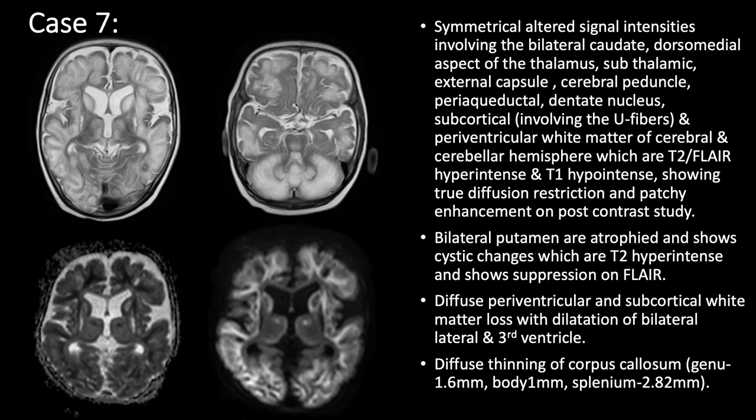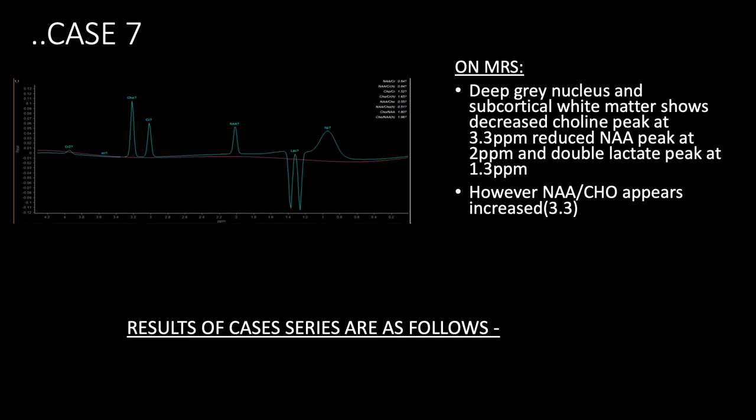This is a case of a 5-month-old male patient, which shows bilateral symmetrical T2 FLAIR hyperintensities in caudate and dorsal medial aspect of thalamus, periaqueductal and dentate nucleus, which are showing diffusion restriction. There are other MRI findings of hypoxic ischemia also present in this case. On MRS, it showed double lactate peak.